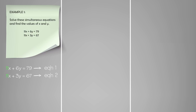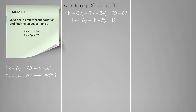Notice the coefficient of x is the same in both equations. Since we are allowed to subtract the equations, 11x minus 11x will give us 0, eliminating the x term. Subtracting equation 2 from equation 1 gives us 11x plus 6y minus (11x plus 3y), which is equal to 79 minus 67. Expanding the brackets: negative bracket gives negative 11x minus 3y. Grouping like terms: 11x minus 11x plus 6y minus 3y is equal to 12, and the x terms cancel.